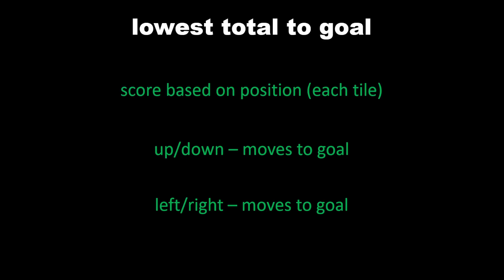In summary, the Manhattan distance is used to calculate the lowest total distance to the goal. The scores are based on the position of each tile — that is, how many moves there are to the goal going up, down, left, or right.